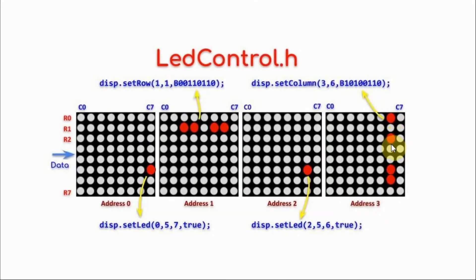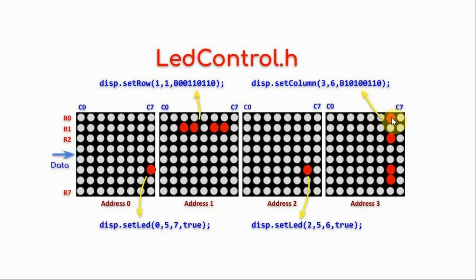If we want to display a column pattern, we use the setColumn function. The first argument is the address number, the second argument is the column number, and the third argument is the byte value starting from the most significant bit, for example 10100110.